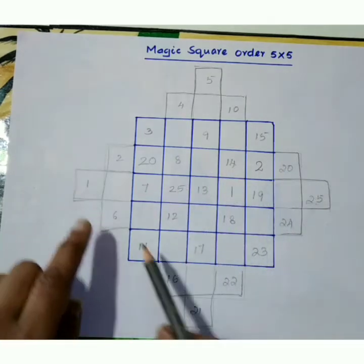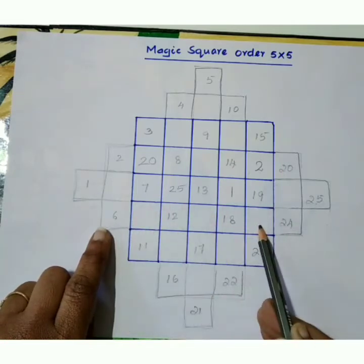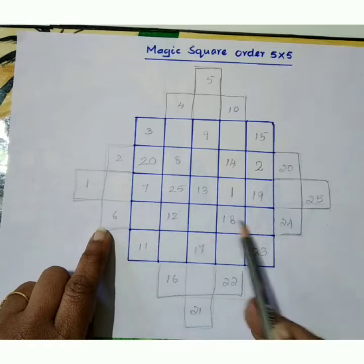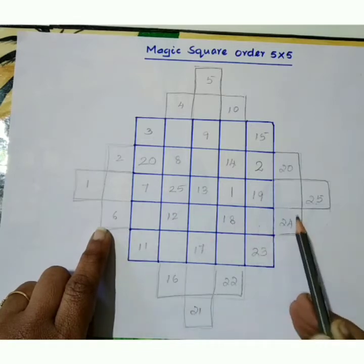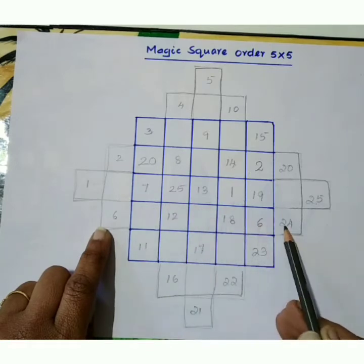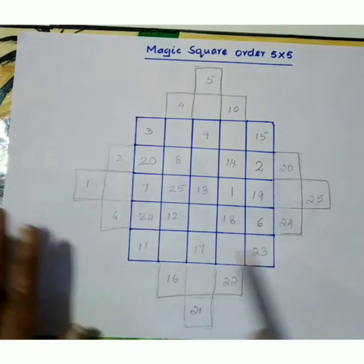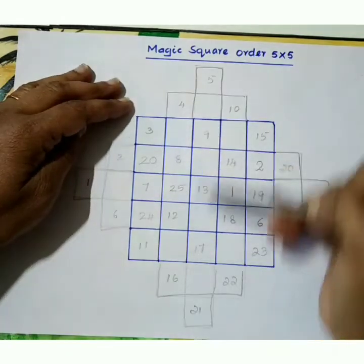Again in this row, row end box left to right this one and right to left this one. So shift this 6 to here and 24 to here. Now row wise we completed. Now we can go to column wise.